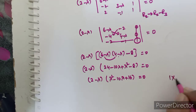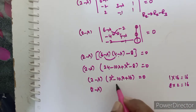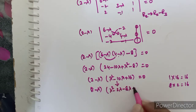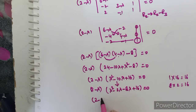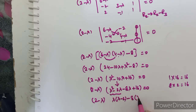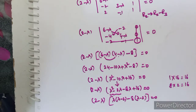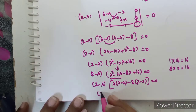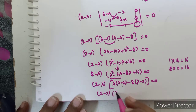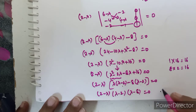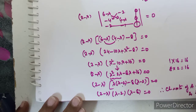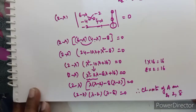We factor the quadratic λ² - 10λ + 16. Since 1×16=16 and 8×2=16, we write λ² - 2λ - 8λ + 16 = λ(λ-2) - 8(λ-2) = (λ-2)(λ-8). Therefore the characteristic roots of this 3×3 matrix are λ = 2, 2, 8.